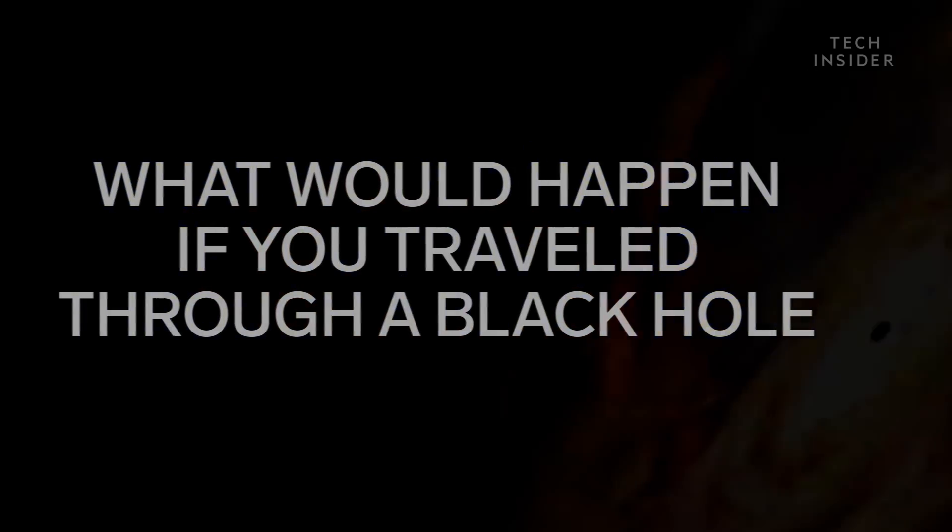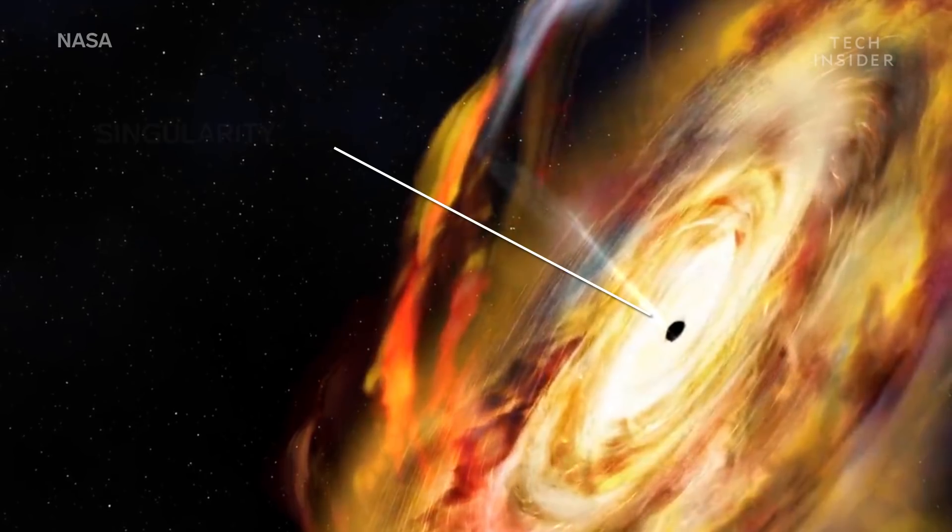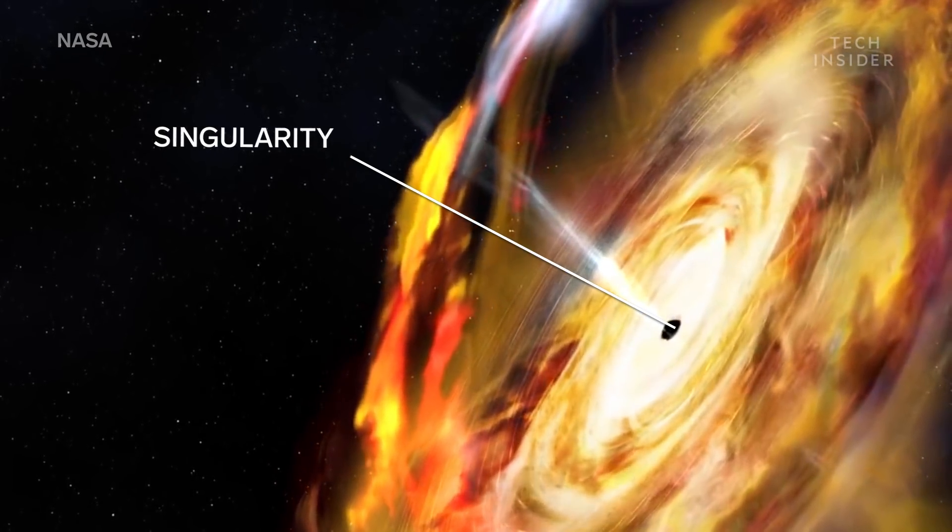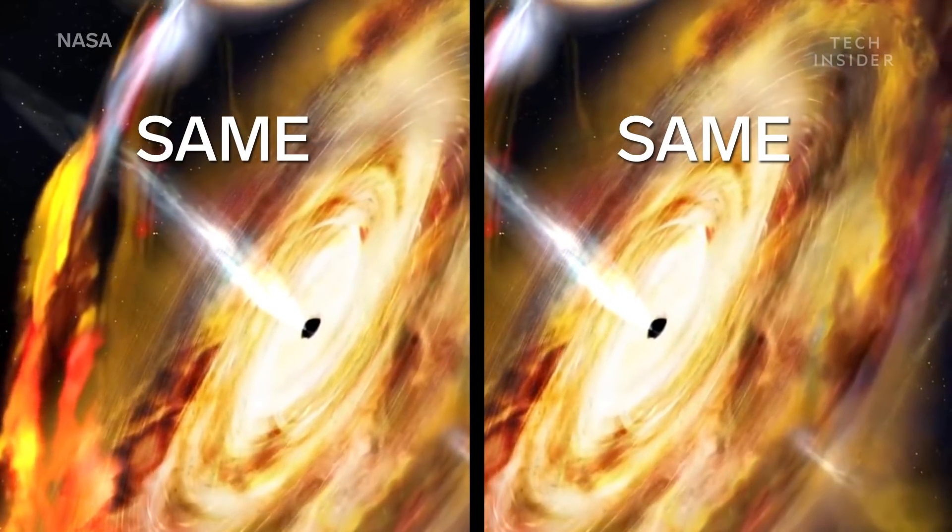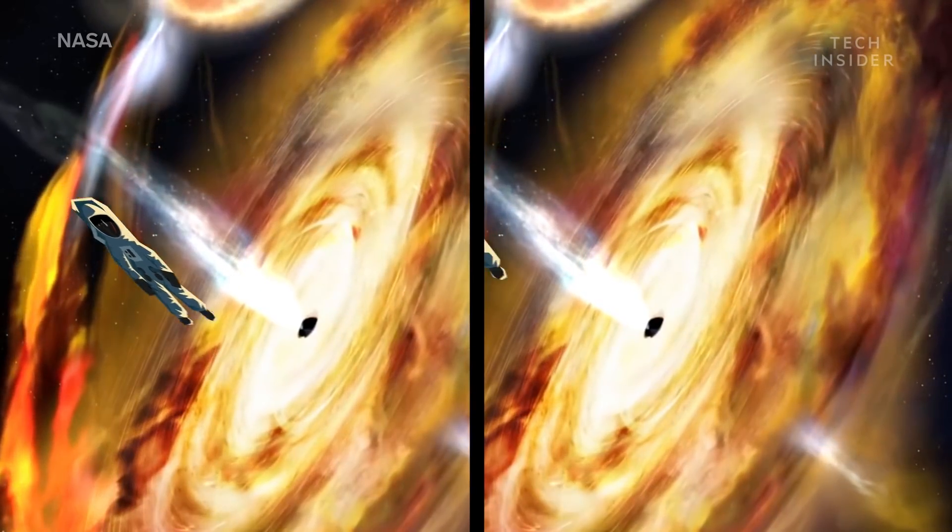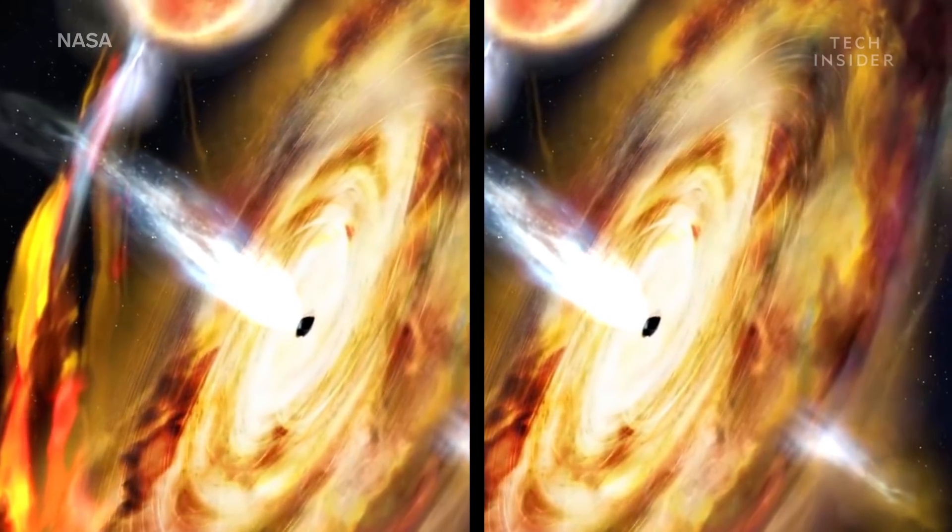At the center of every black hole is a point of infinite density, called a singularity. It's what gives black holes their strong gravitational pull. And for decades, scientists thought singularities were all the same. So anything that passed the event horizon would be destroyed the same way, by being stretched and pulled like an infinitely long piece of spaghetti.